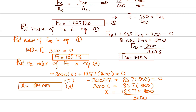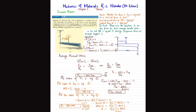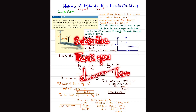So X = 124 mm. When the 3 kN load acts at 124 mm from point A, the average tensile stress in tie rod AB equals the average compressive stress at the smooth contact surface at point C. That concludes example 1.8. I hope you enjoyed this video. If you're new to the channel, please subscribe and press the bell icon for notifications. Any questions can be left in the comments. Thank you for watching.